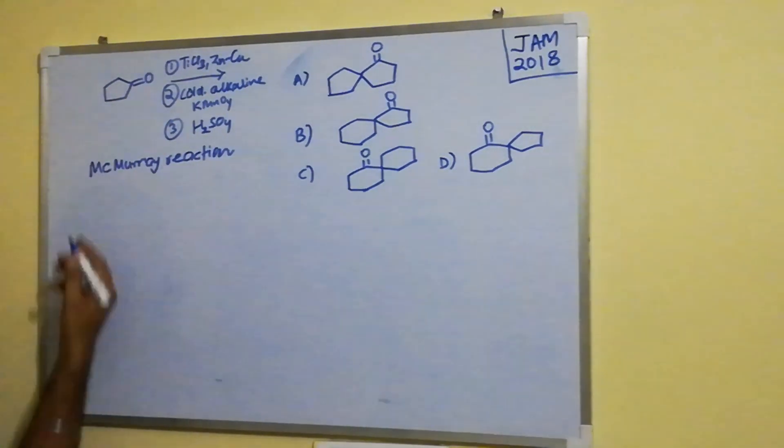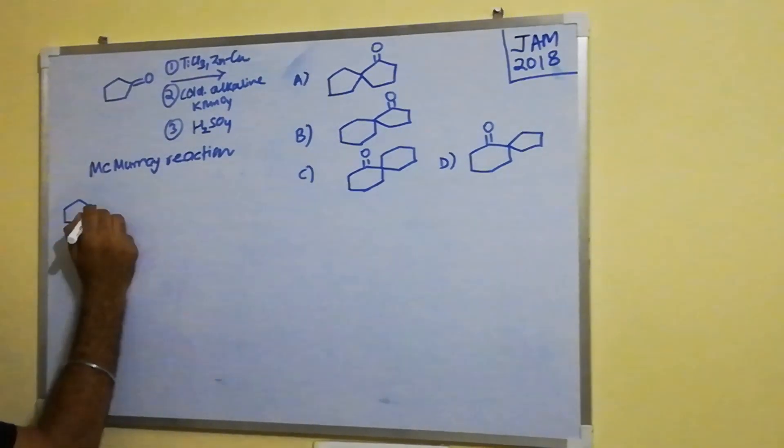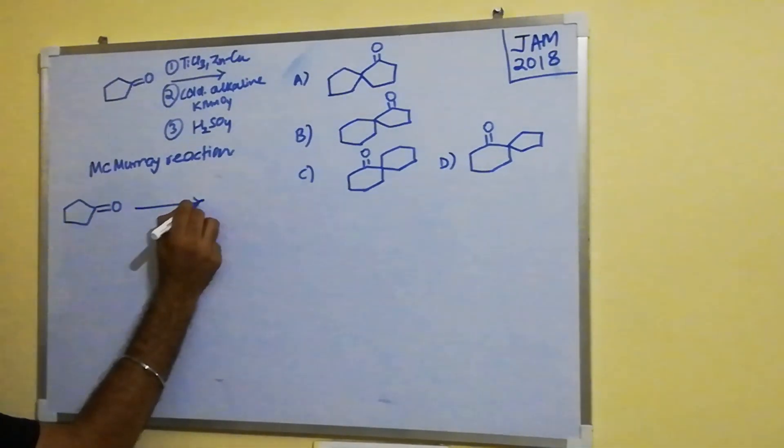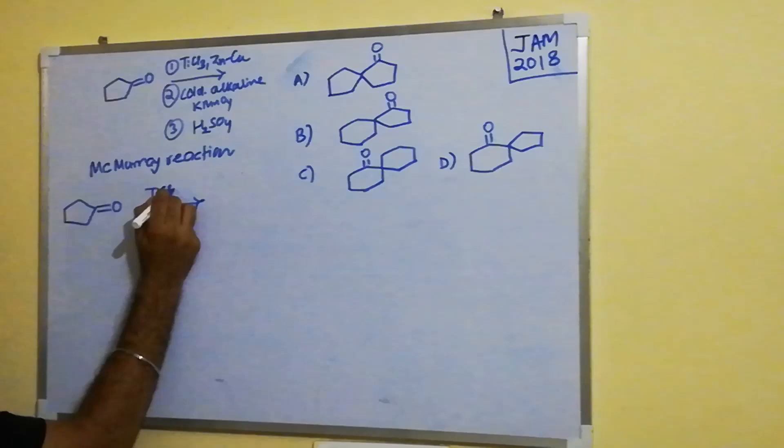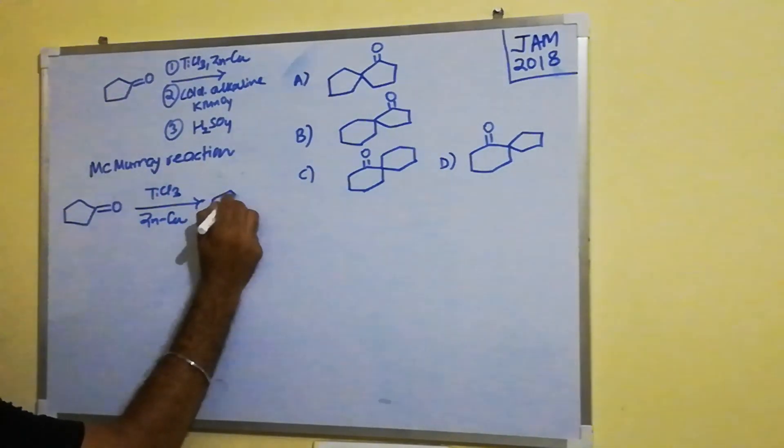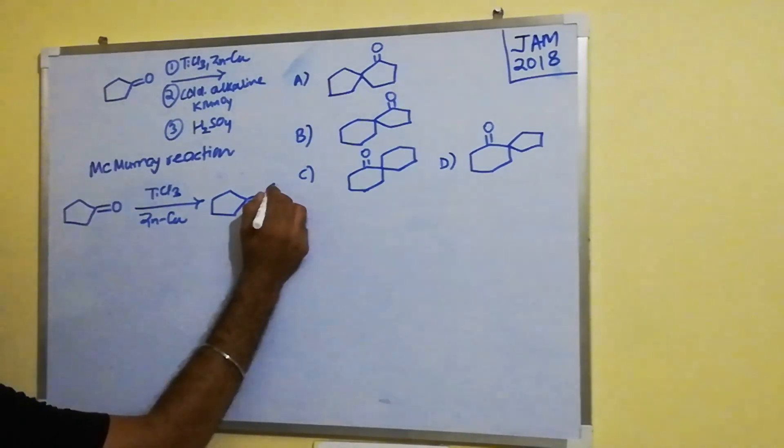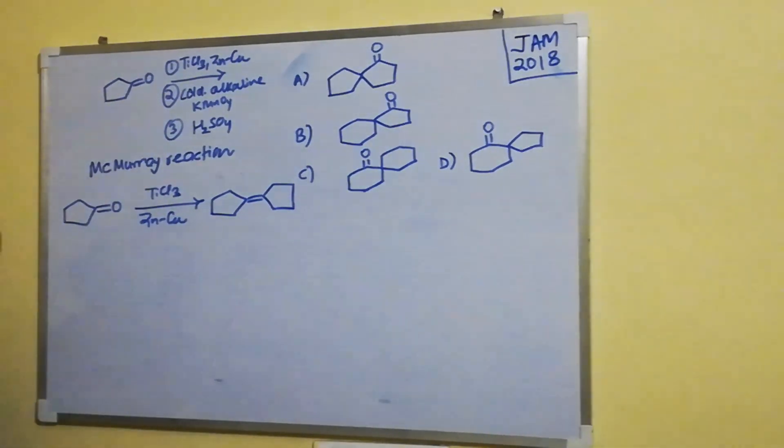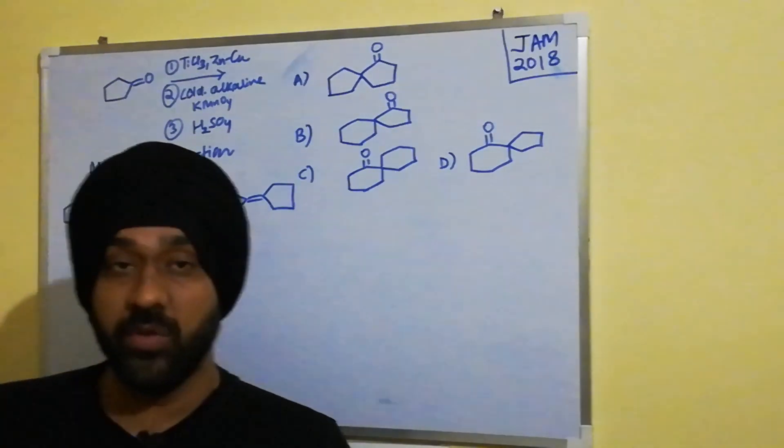This is exactly what is happening here. So in the first step we have TiCl4 and zinc copper alloy, which leads to the formation of this alkene. And in the second step, what we are doing...